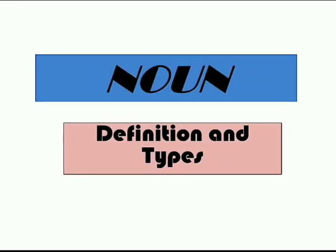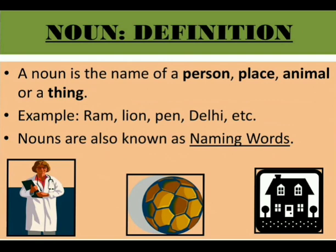First, we will study the definition and then we will move on to different types of nouns. A noun is the name of a person, place, animal or a thing. Examples can be a person — for example, Ram; any animal such as Lion; a place such as Delhi.